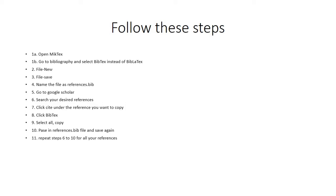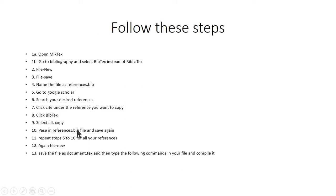Repeat these steps for all of the references you need for your thesis or synopsis. Then go to File, click New — this time we are going to create another file which will contain our document. Save this file as document.tex. This is the actual document file that will contain your thesis or research article, while the .bib file will contain all of your references.